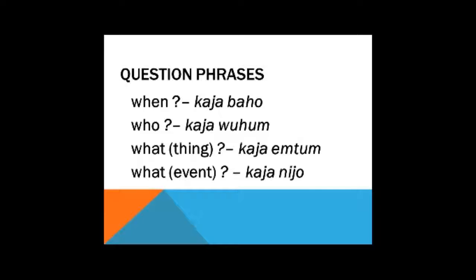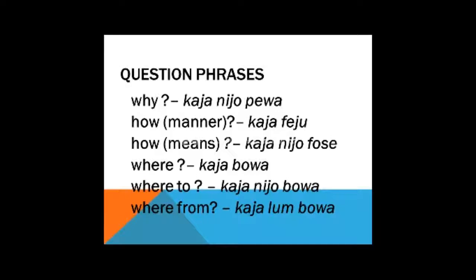Let's look at some question terms in isolation. You might notice that the terms in Latropath are often more than one word where in English they'd be one word. They usually begin with kaya, which is often truncated to kai in spoken Latropath. So: when — kai baho; who — kai wohum; what thing — kai yemtum or kai yemtum; what event — kai nio; why — kai niyabawa (three words in Latropath); how in terms of manner — kai afeiul; how in terms of means — kai niyafose; where — kai boa; where to — kai au neyabowa; where from — kai alumbowa.